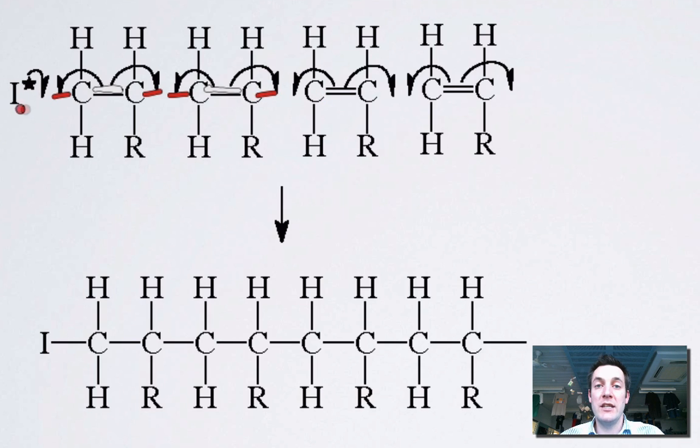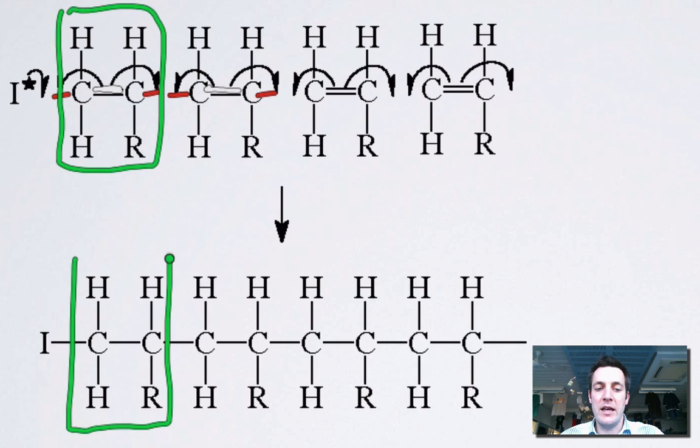We often use an initiator to do this reaction but we don't need to worry about those in the Year 12 course. What we do need to know is that alkenes can open up their double bonds and when they do so, they're going to form these very long chains, many millions of atoms long in some cases, where the monomer that we used is basically represented repeating again and again in this chain.